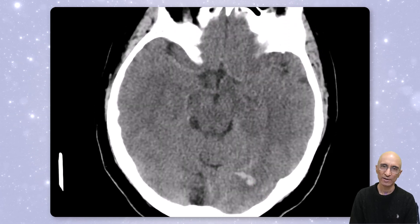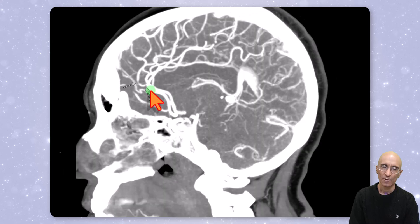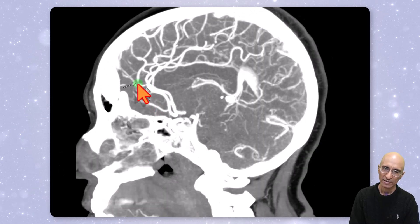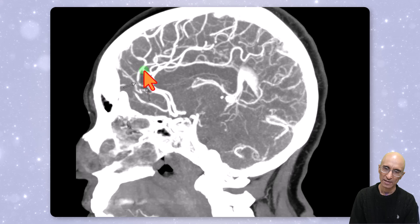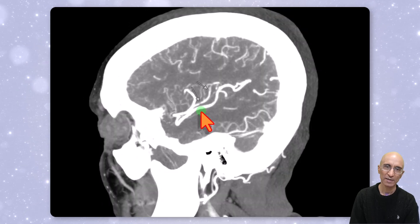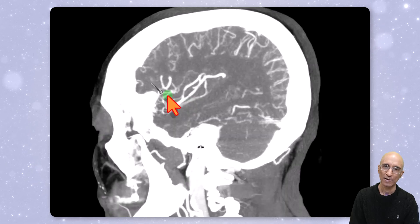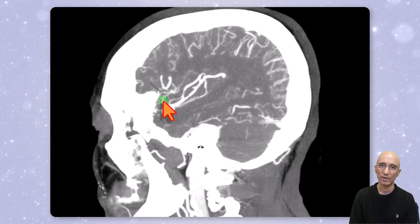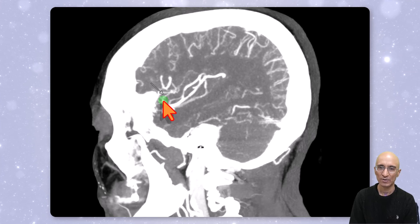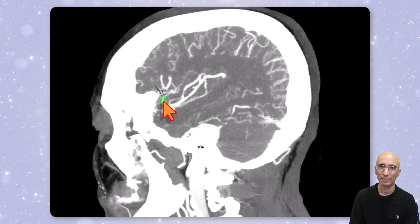The patient also underwent a repeat CT angiogram examination. On the repeat CT angiogram, we can clearly see regions of vasospasm in the anterior cerebral artery and middle cerebral arteries, which were not seen on the initial CT angiogram. These findings are concerning for reversible cerebral vasoconstriction syndrome (RCVS) in the setting of hypertension.